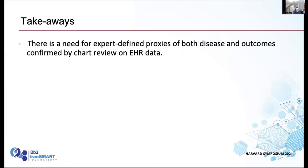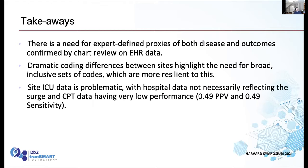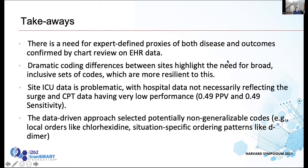The takeaways: there are dramatic coding differences between sites, so you need broad, inclusive sets of codes that are resilient to that. You need to use real ICU data — if you just look at CPT codes and say that's your ICU data, the performance was terrible; it does not seem to reflect ICU state. Although there are ways around it — if you have multiple CPT codes on consecutive days, you get closer to reality. But just looking at the CPT code for ICU stay is not a great approach. The data-driven approach creates non-generalizable patterns that need to be accounted for with some expertise.